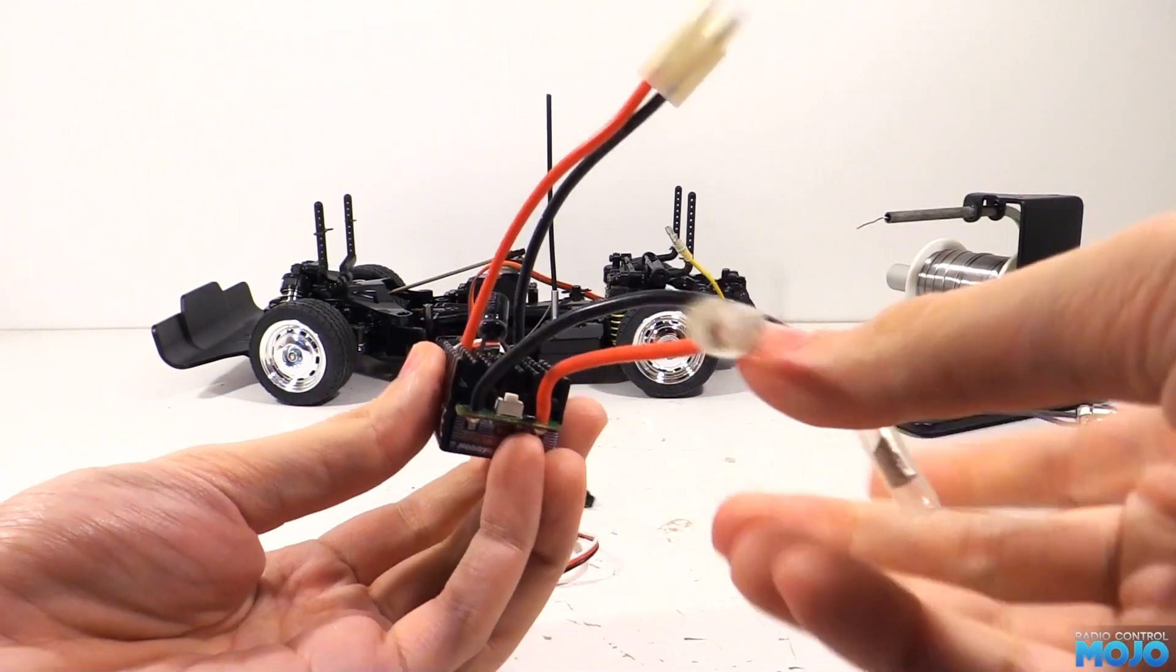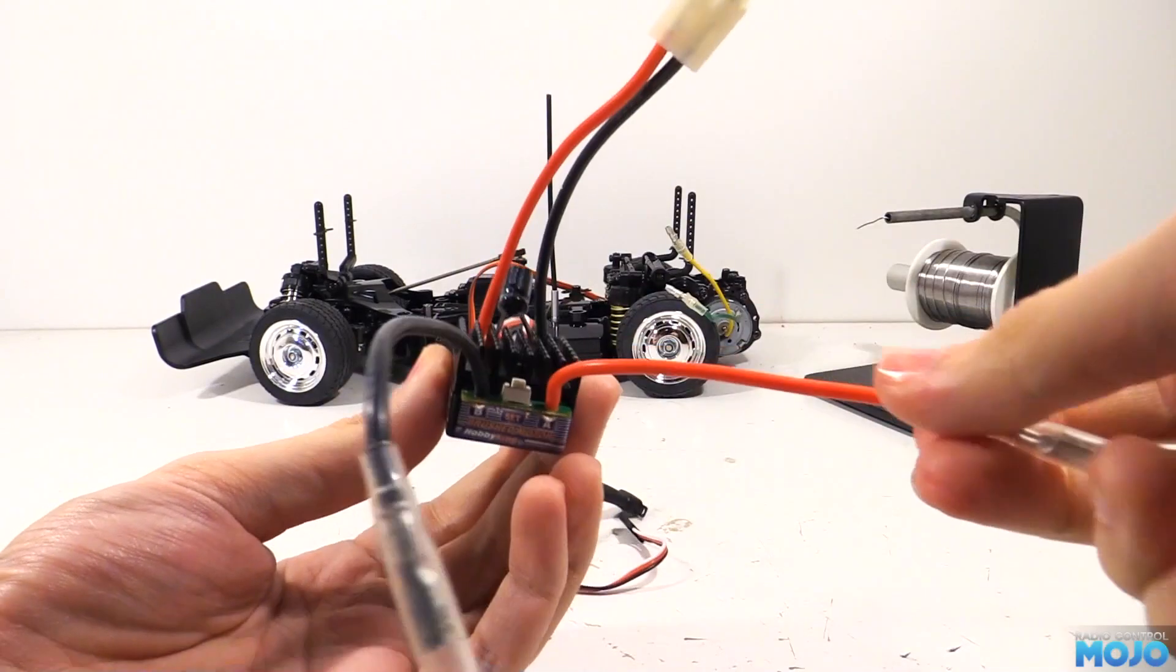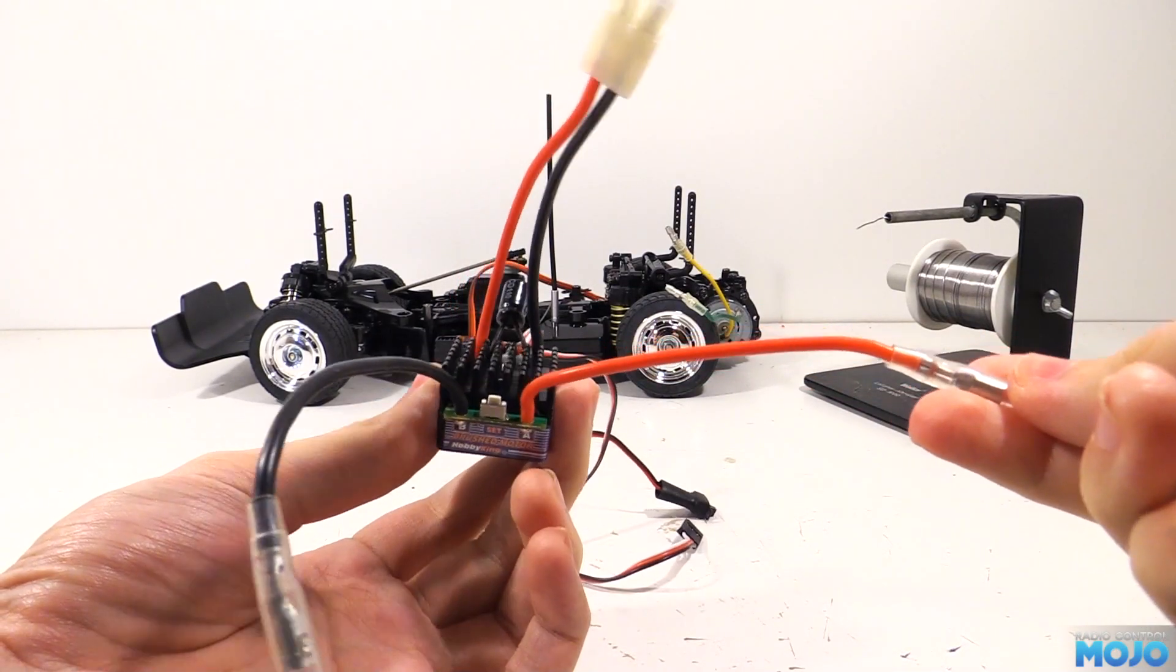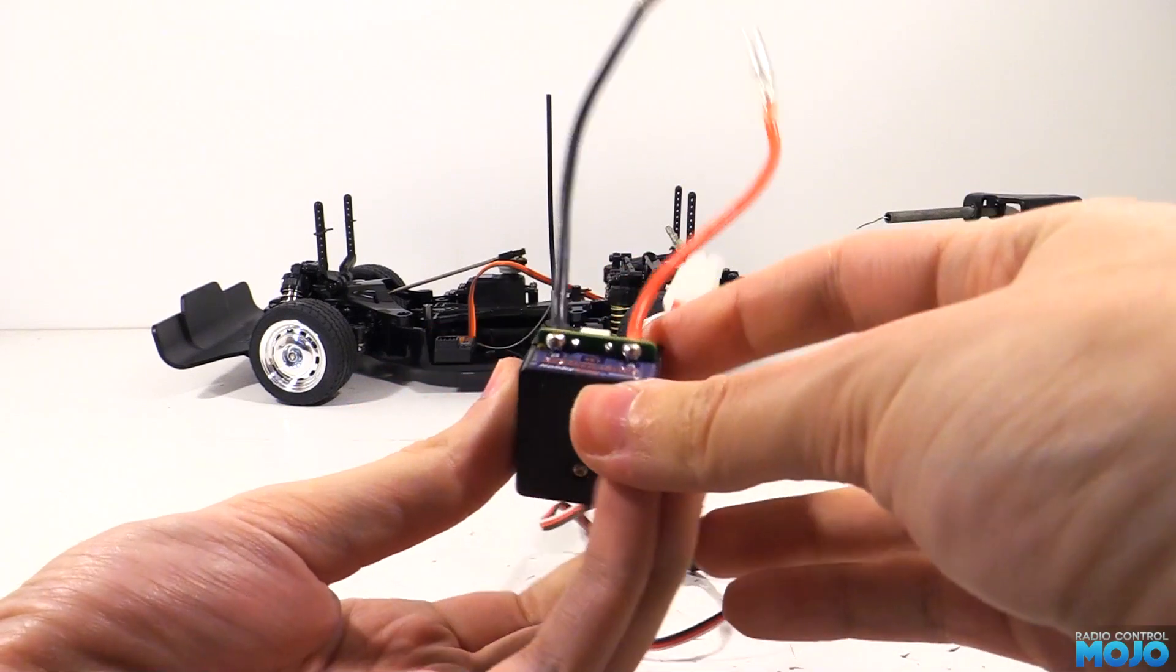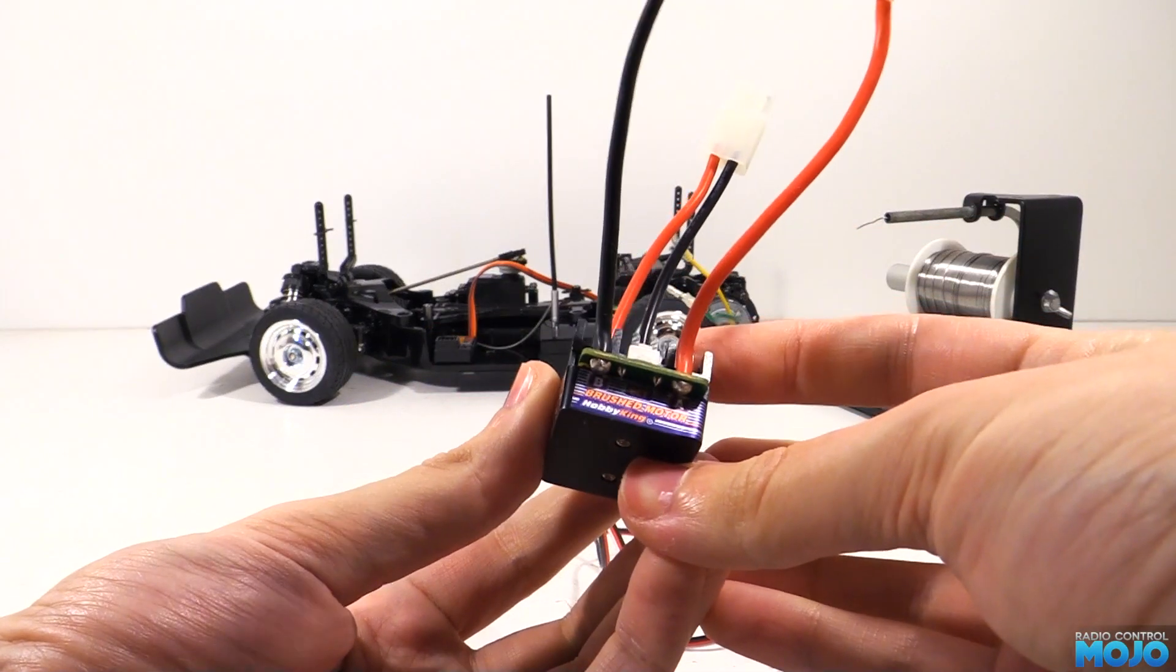The terminals on the ESC, a Hobby King X-Car 45 amp, are marked A and B. It doesn't really matter what colour the wires are, you could do them both the same. It makes no difference.